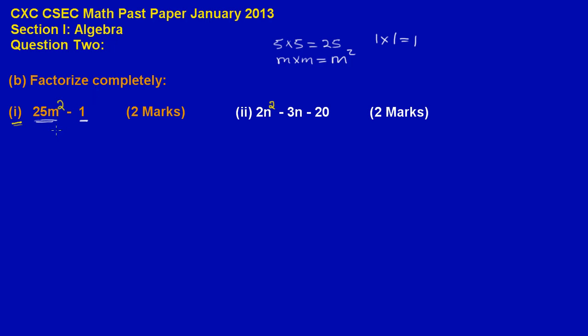When factorizing a difference of two squares, it's very easy. It's as if you're taking the square root of both terms. So basically, the square root of 25 is 5.